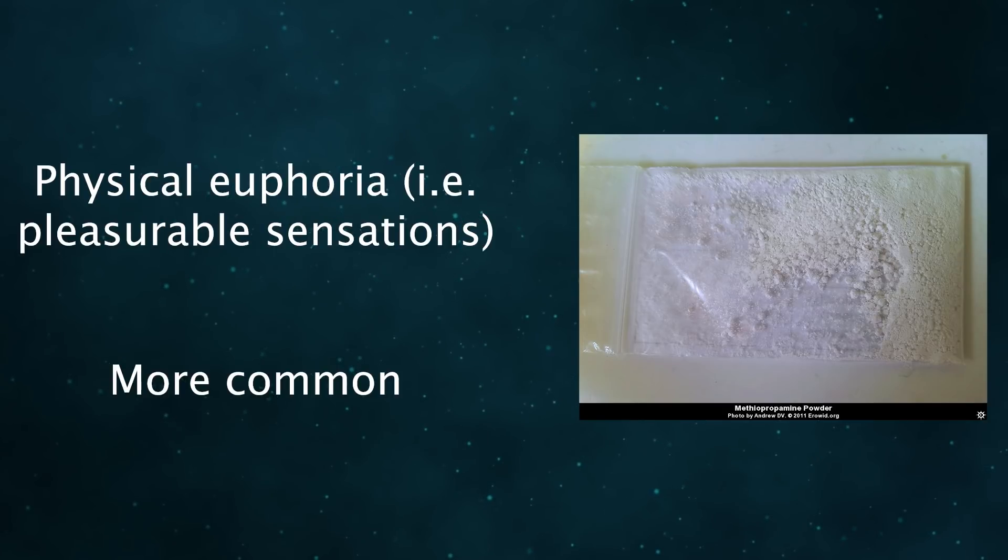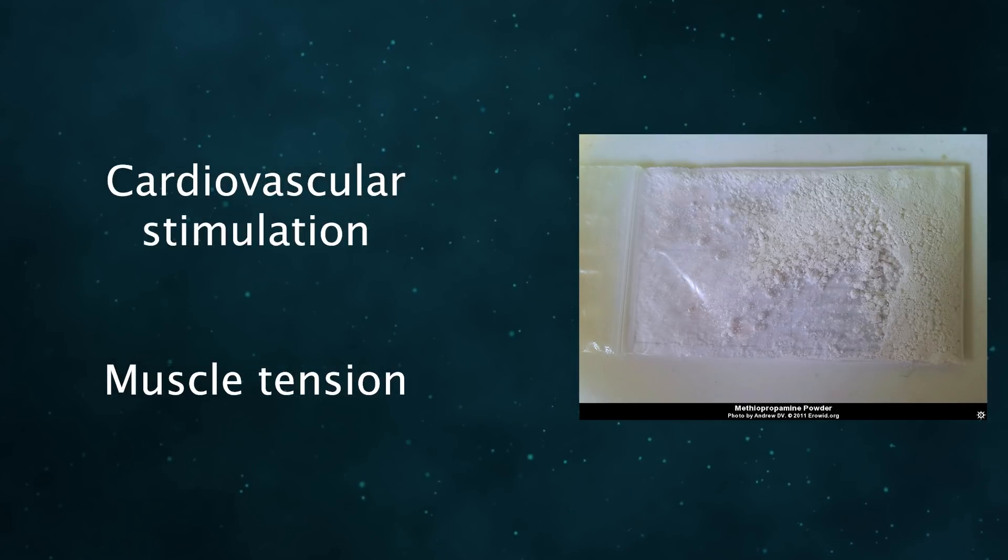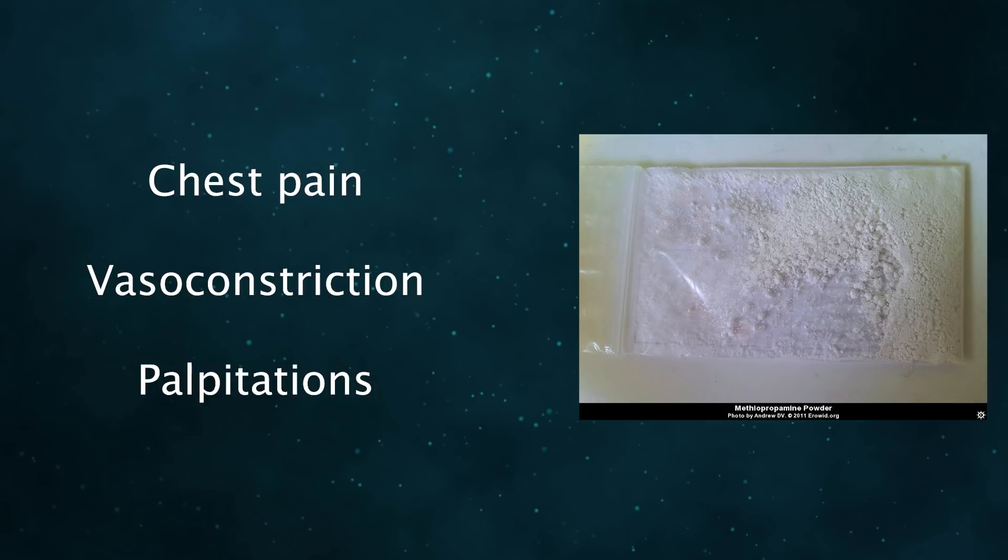Physical euphoria is more common than cognitive euphoria. There can be pleasurable warm and sometimes cold sensations around the body. A true rush of physical euphoria is more common with the non-oral routes of administration. Cardiovascular stimulation and muscle tension are two fairly common properties that can make the drug uncomfortable. There might be a higher than usual incidence of chest pain, vasoconstriction, and palpitations.